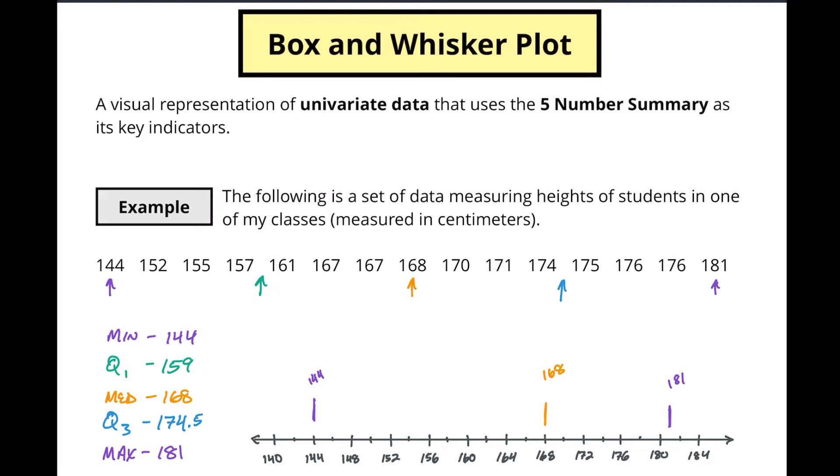Then I'm going to take these quartiles. Now these are not specific values in our data set but that is okay and this one we know is 159. So 159 is about right here and 174.5 is going to be, let's see, 174 will be right here so just to the right of this value right here and that's going to be 174.5.